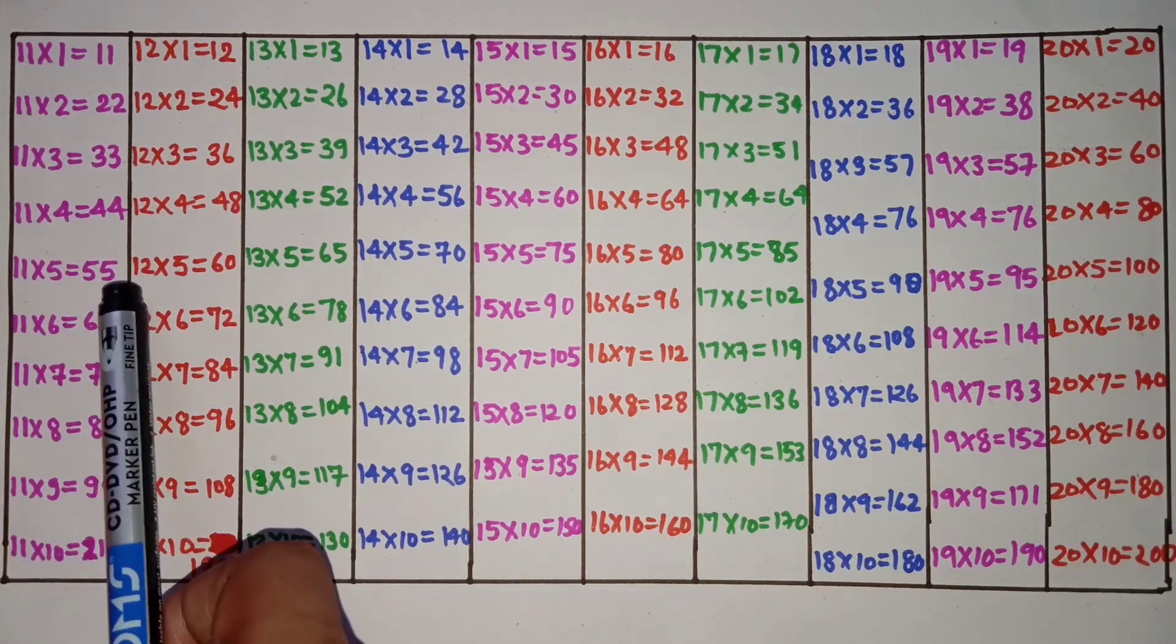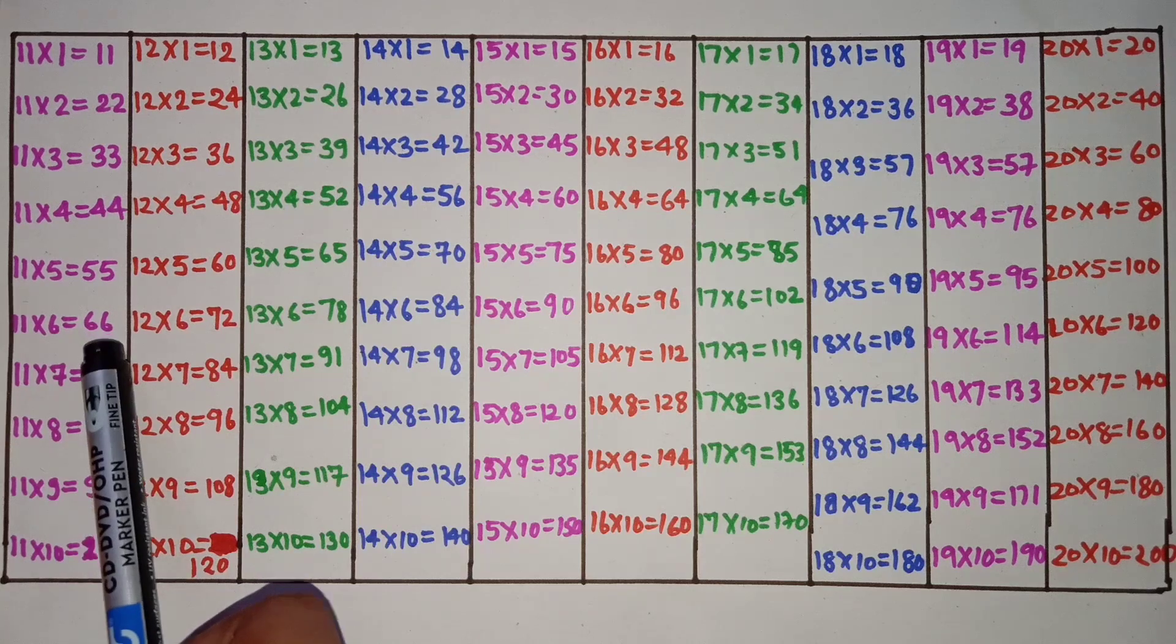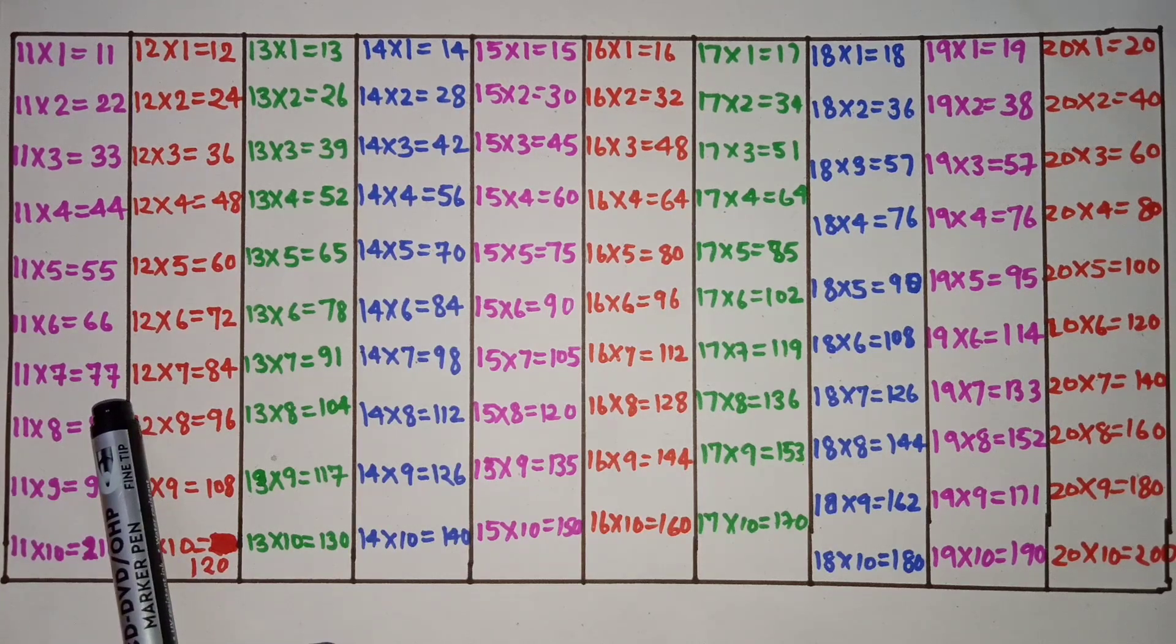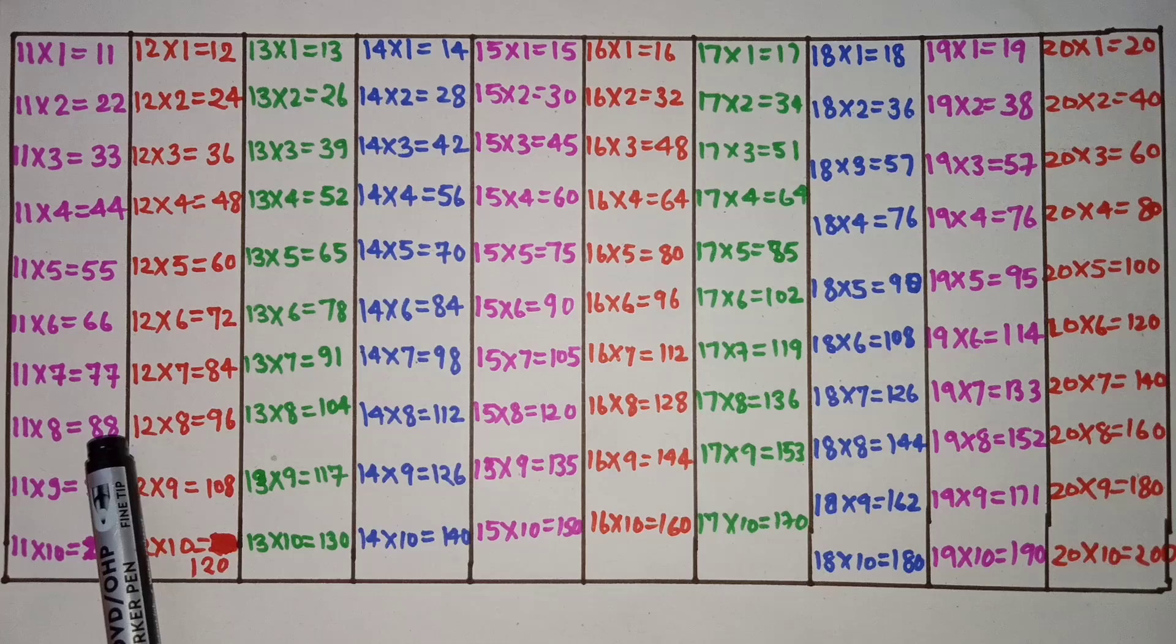11 fives are 55, 11 sixes are 66, 11 sevens are 77, 11 eights are 88.